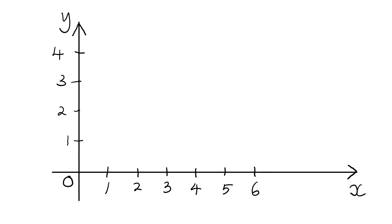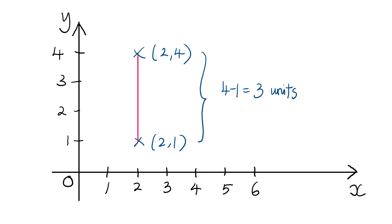Now let's look at another example. Supposing I have two points: (2, 1) and (2, 4). If we join both points with a line segment, we can see it is a vertical line. How do we find the length? It will be 4 minus 1, which gives you 3 units, because the distance of this point from the x-axis is 4 units. So that is how you find the length of a vertical line.